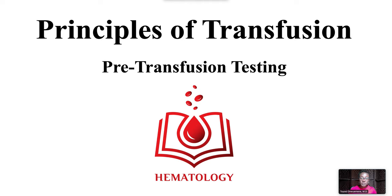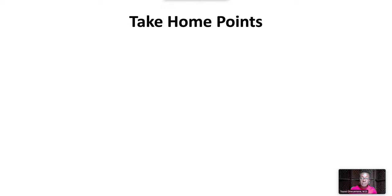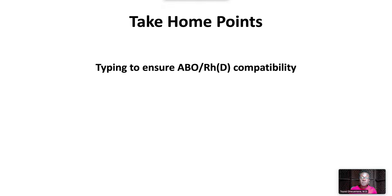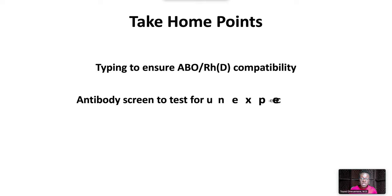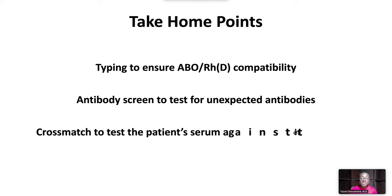Welcome to Principles of Transfusion. We will discuss pre-transfusion testing including ABO-RH typing, antibody screen, and cross-match. We will review the following take-home points: pre-transfusion testing includes typing to ensure ABO-RH compatibility, an antibody screen to test for unexpected antibodies, and a cross-match to test the patient's serum against the prospective unit.